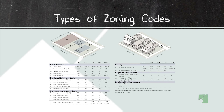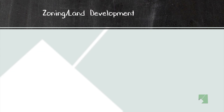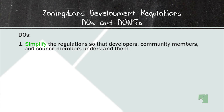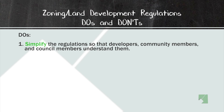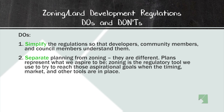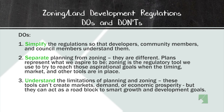Our zoning do's: we want to simplify our regulations so that developers, community members, and council members — everyone who reads them — should be able to understand them. You should not need a PhD to understand what you can and can't do on your property. We want to separate planning from zoning, as these are different and should be treated differently in our code. We want to understand the limitations of zoning — these are tools that can't create markets, demand, or economic prosperity.